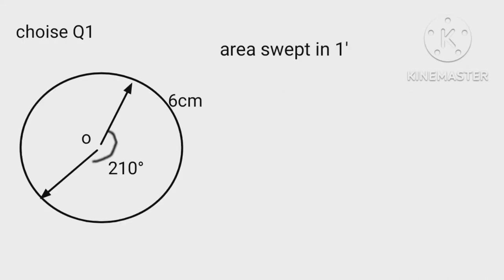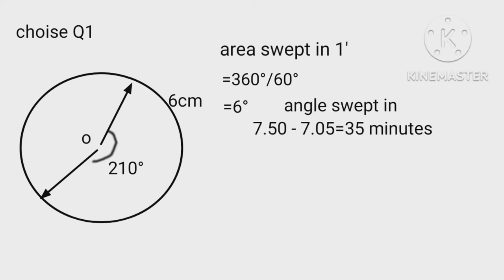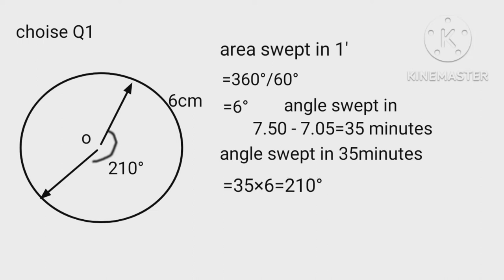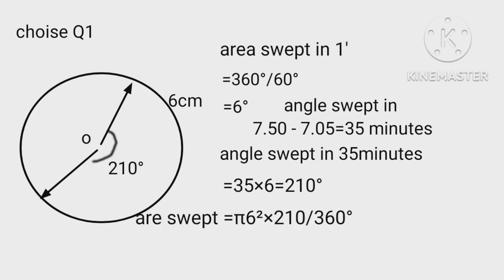Area swept in one minute equals 360 degrees upon 60, which equals 6 degrees per minute. The angle swept from 7:05 to 7:40 equals 35 minutes. Angle swept in 35 minutes equals 35 multiplied by 6 equals 210 degrees. Hence area swept equals pi times 6 squared times 210 upon 360.